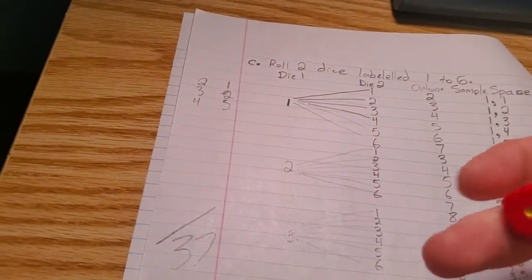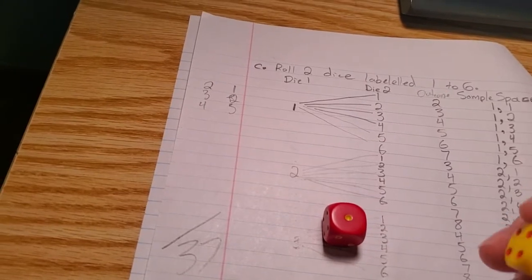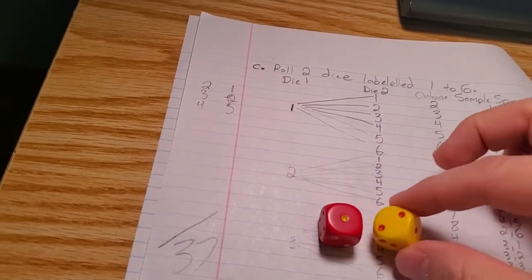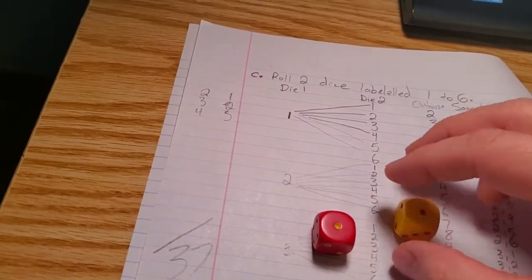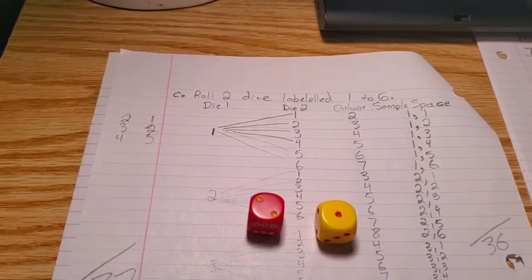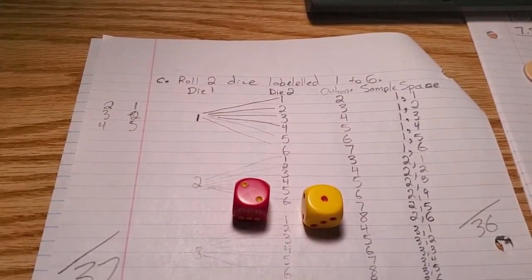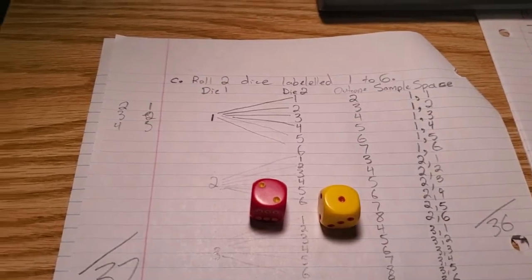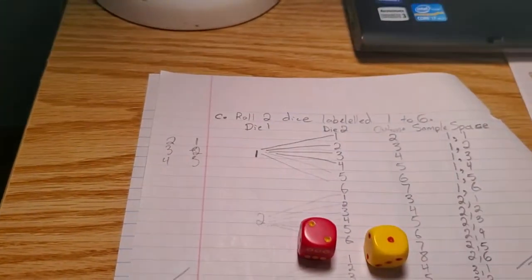Count through how many there are for four. Pause the video if you didn't do this, and then count that up, and come up with what your theoretical sample space is.